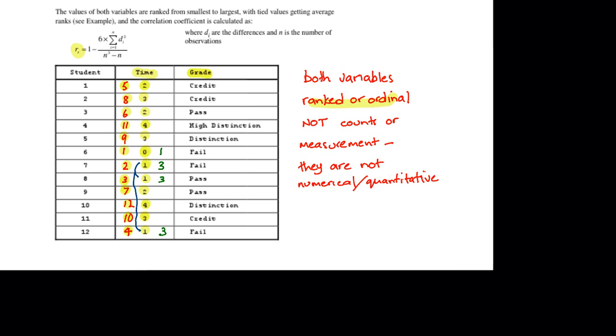Next we've got the 2s. So they've got ranks 5, 6 and 7. The average of those is 6. Then we've got the 3s. They have ranks 8, 9 and 10. The average of those is 9. So I'll write in 9 next to the 3s.